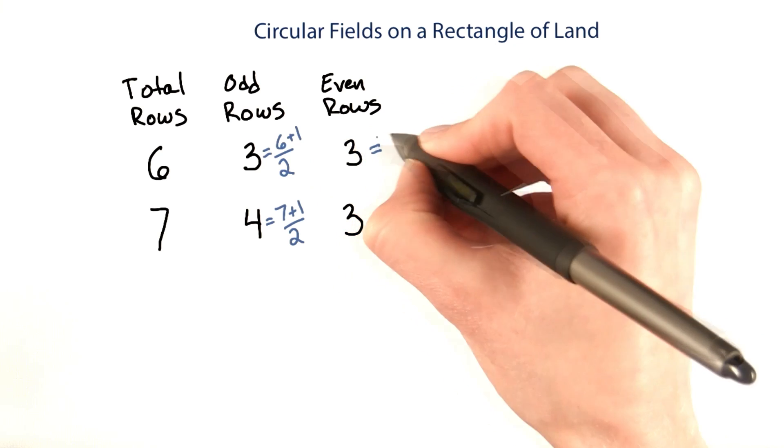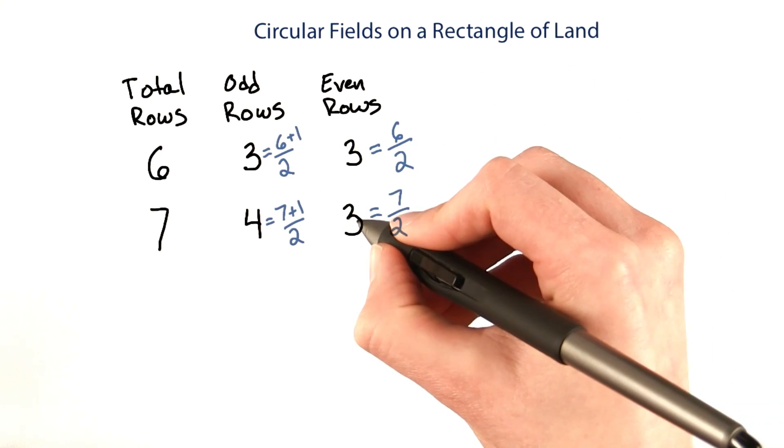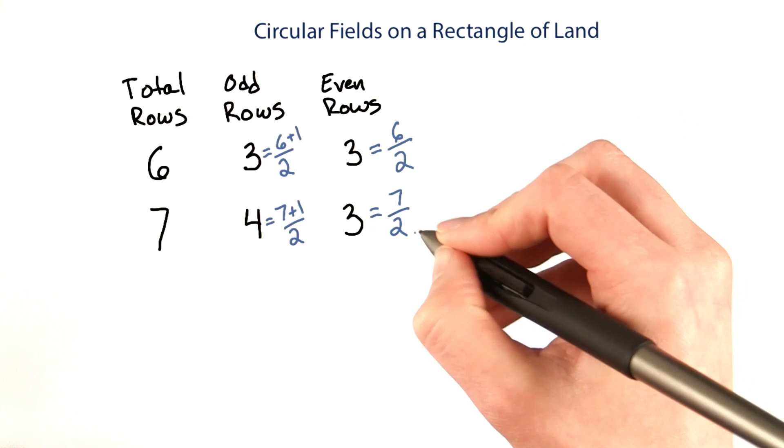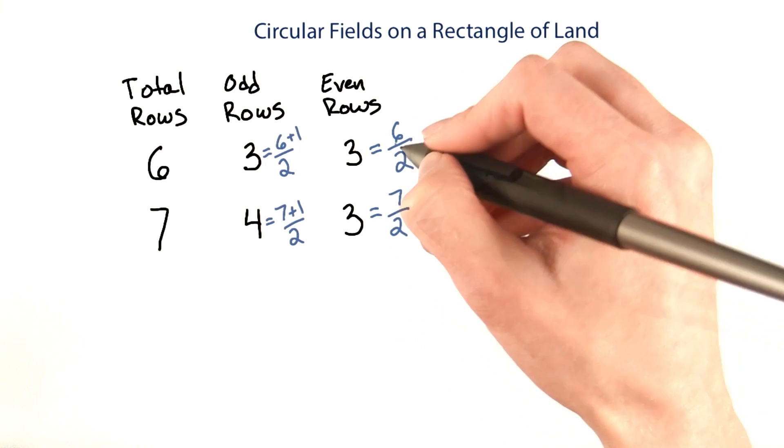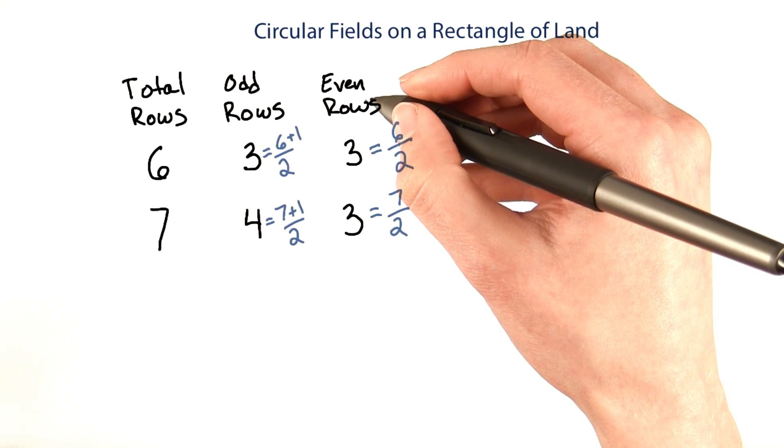For the even rows, six over two is three. That one works. And seven over two is pretty close to three. In Java land, that's three. So if I just divide by two and throw away the remainder, it looks like I get the number of even rows.